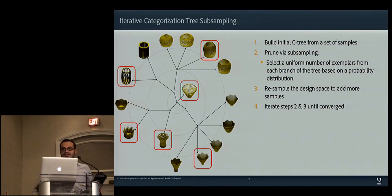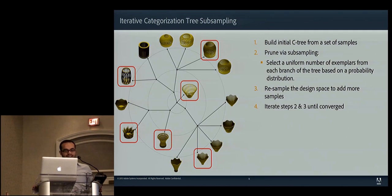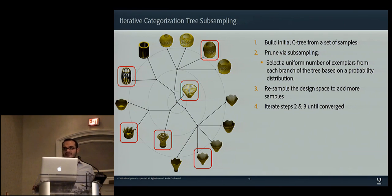We modify the categorization tree building approach presented by Huang et al. into an iterative version in order to exploit the fact that we can sample as many instances as we want because of the generative procedural modeling rule set underlying the system. We build an initial tree from a set of samples, from which we iteratively prune for selecting representative exemplars for each branch, and resample the design space to add more samples, continuing until we converge — adding only insignificant shape variation — so we are confident we are covering the full space of different shape variations.